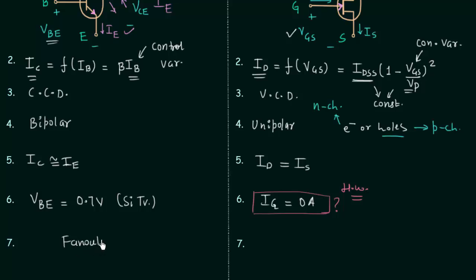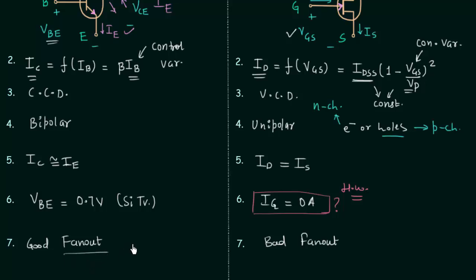In the seventh point we will talk about fan-out. In case of BJT the fan-out is good, and in case of JFET the fan-out is bad. Fan-out tells us the maximum number of devices that a BJT or JFET can power.